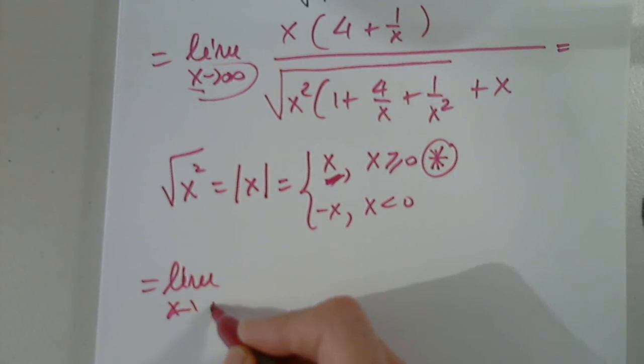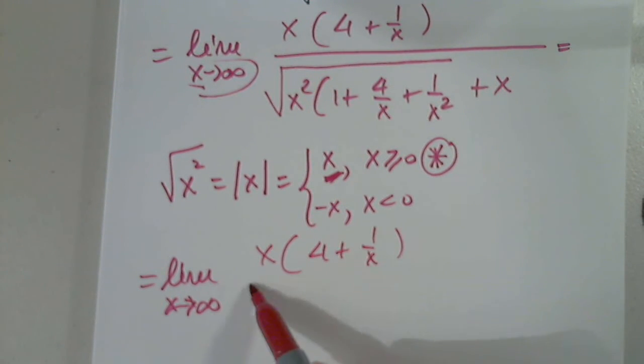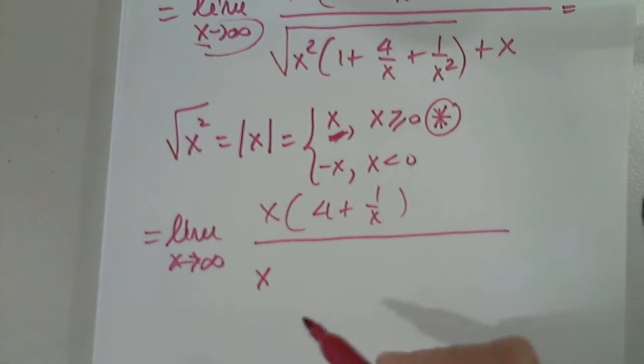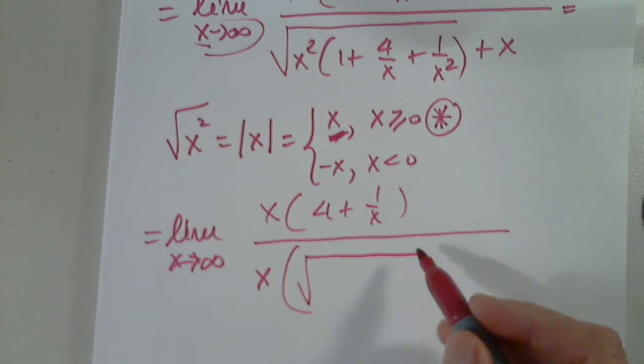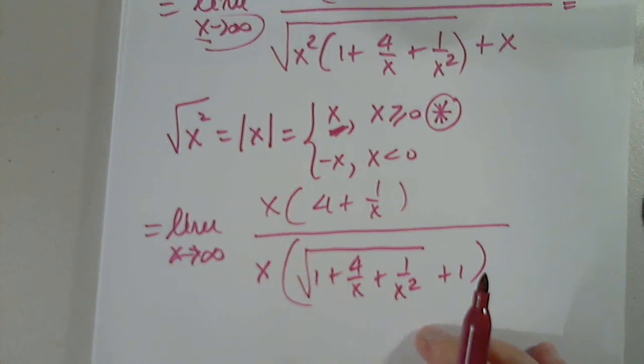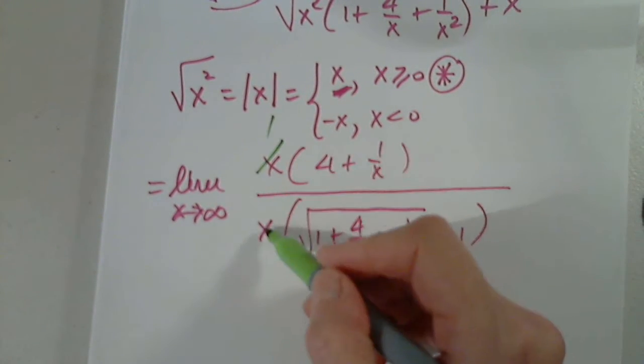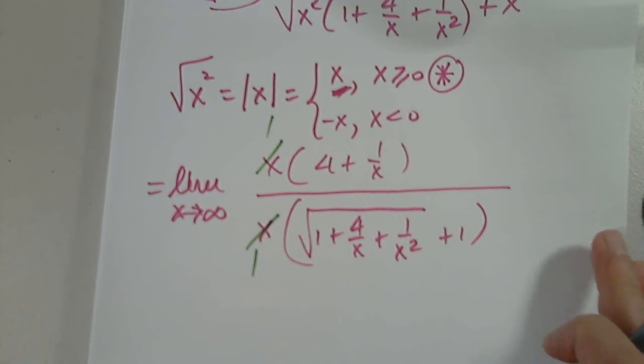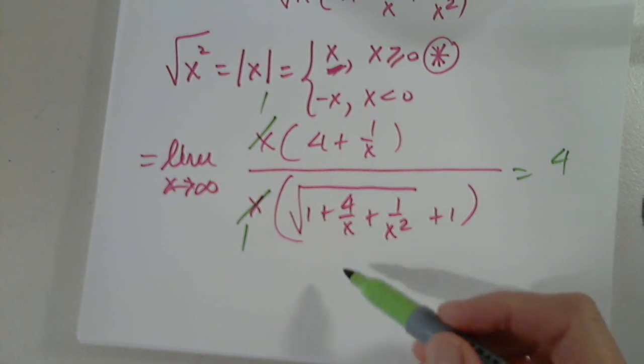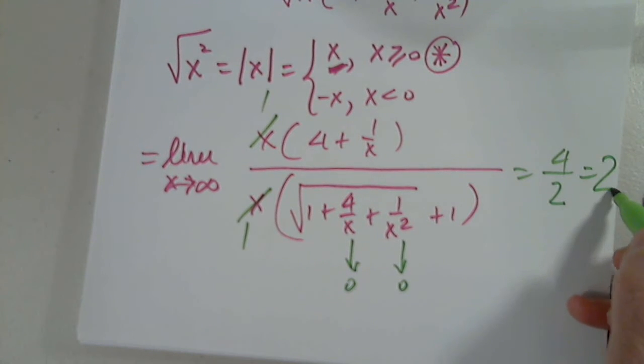So limit as X approaches infinity from X, 4 plus 1 over X and X. And then I can factor it from both. So this is the square root of 1 plus 4 over X plus 1 over X squared and plus 1. Now I managed to get rid of what I wanted to get rid of. The numerator approaches 4, the denominator approaches 2. So the answer is 2.